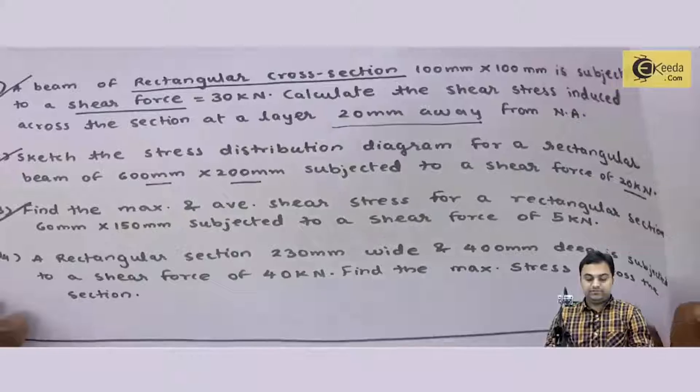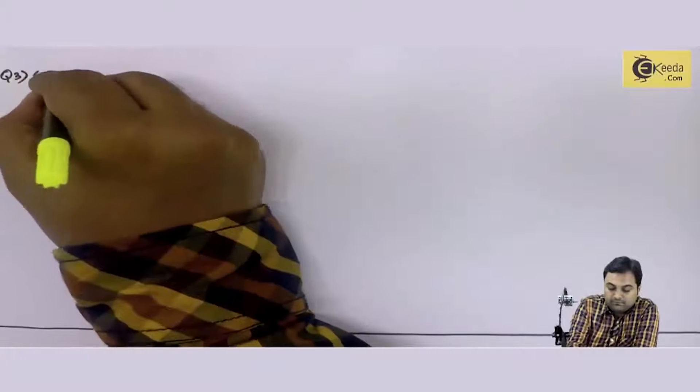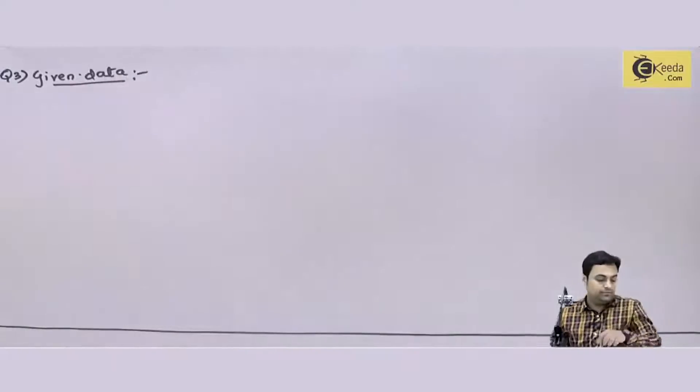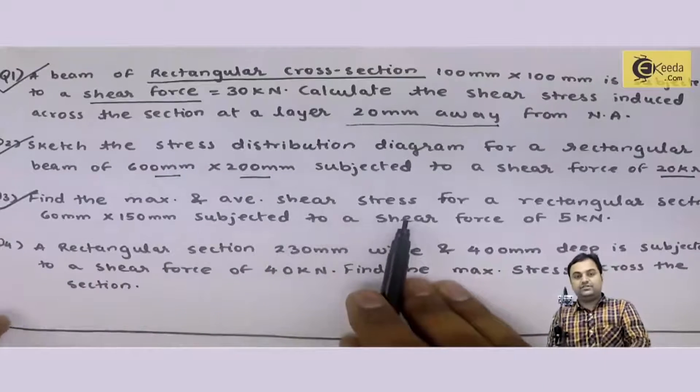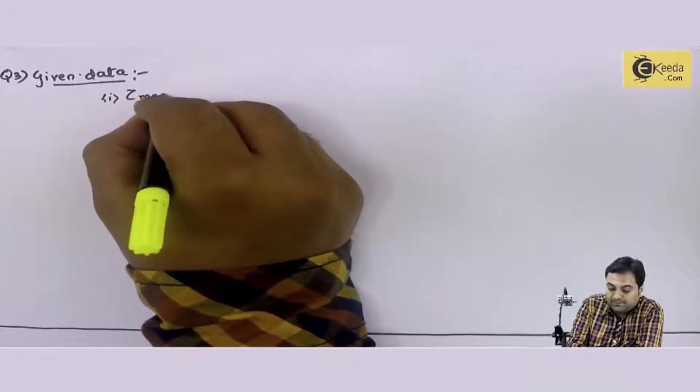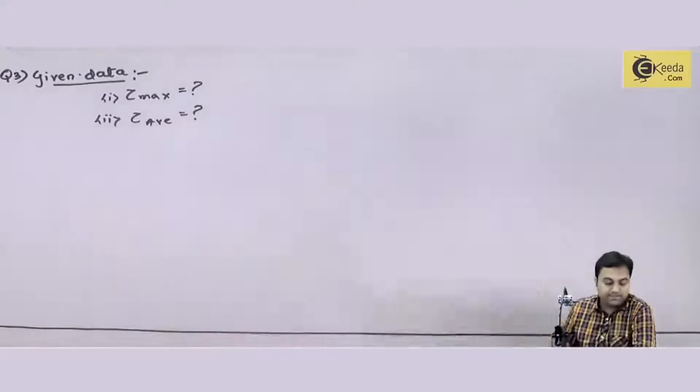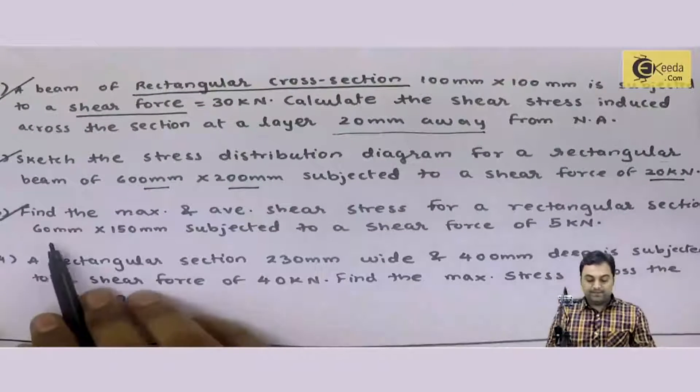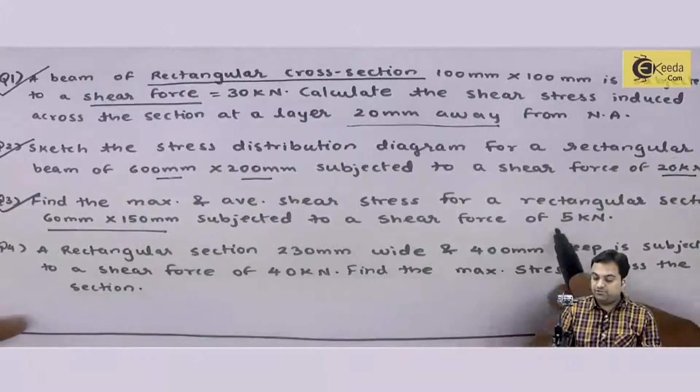The question is find the maximum and average shear stress for a rectangular section 60 mm into 150 mm subjected to a shear force of 5 kilo Newton. I will write the data for this. The width is 60 mm, the depth is 150 mm.